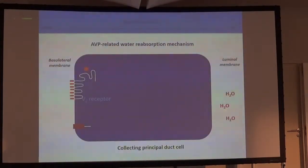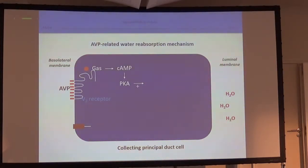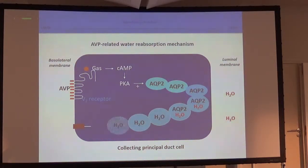Let me speak about the mechanism of impairment of free water clearance at the collecting duct level. Vasopressin binds to the V2 receptor, leading to activation of PKA, which makes possible the exteriorization of aquaporin-2 — our water channel — allowing water to enter into the cell and be transported to the basolateral membrane and then to the interstitial fluid.